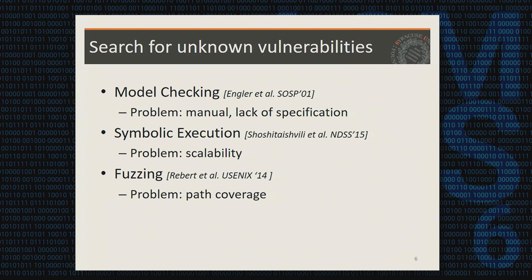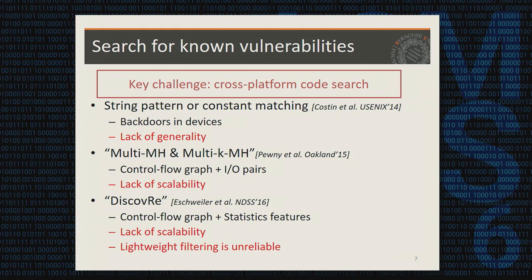Traditional security mechanisms like antivirus and host-based IDS are not feasible because of the low CPU and memory storage on IoT devices. There are some works for finding unknown vulnerabilities, such as using model checking, symbolic execution, and fuzzing, but they are normally very expensive and do not scale. Instead, we focus on finding known vulnerabilities — scanning for them in devices before they enter the market.